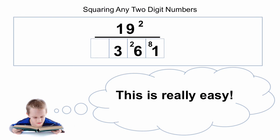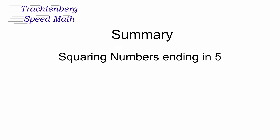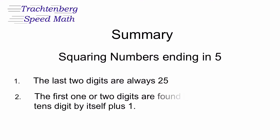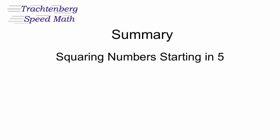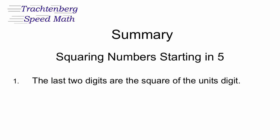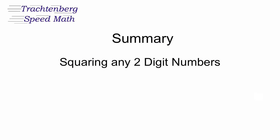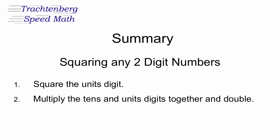It's very easy to square any two-digit number — you should be able to do most of these in your head. To summarise: for squaring numbers ending in 5, the last two digits are always 25, and the first one or two digits are found by multiplying the tens digit by itself plus 1. For squaring numbers starting with 5, the last two digits are the square of the units digit, and the first two digits are found by adding the units digit to 25. For squaring any two-digit number: step 1, square the units digit; step 2, multiply the tens and units digits together and double; step 3, square the tens digit.